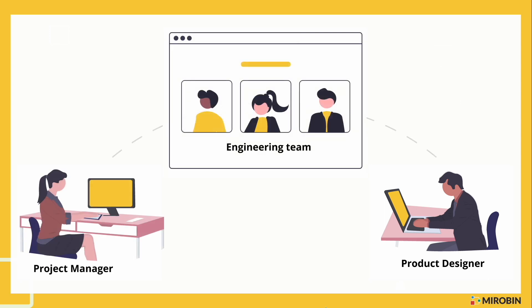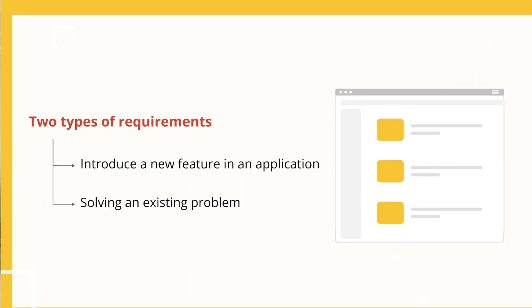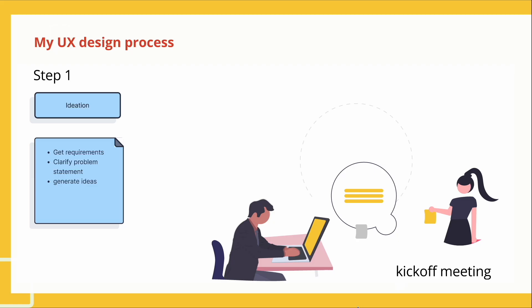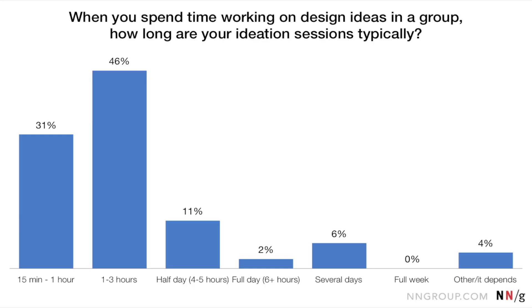As a product designer, I work closely with a project manager and engineer team. The journey starts when the product designer receives the requirement. There are two kinds of need: either we are introducing a new feature or trying to solve an existing problem. For each of them, I start with ideation. Depending on the project timeline, I usually spend half of my day — about three to four hours — on ideation. As shown in this chart from Nielsen Norman Group, 46% of UX designers spend one to three hours in ideation.